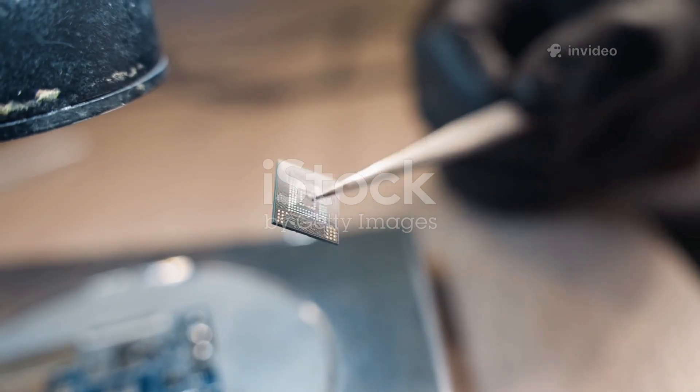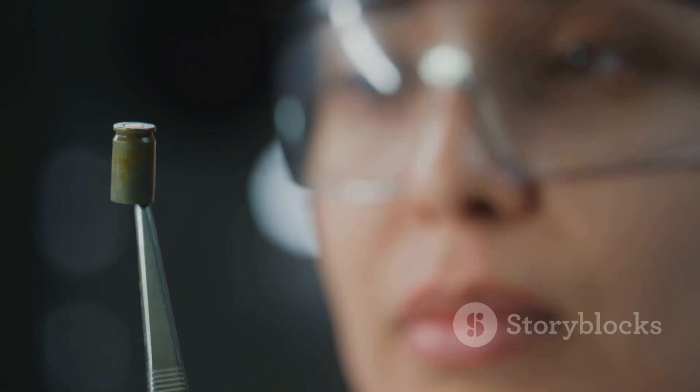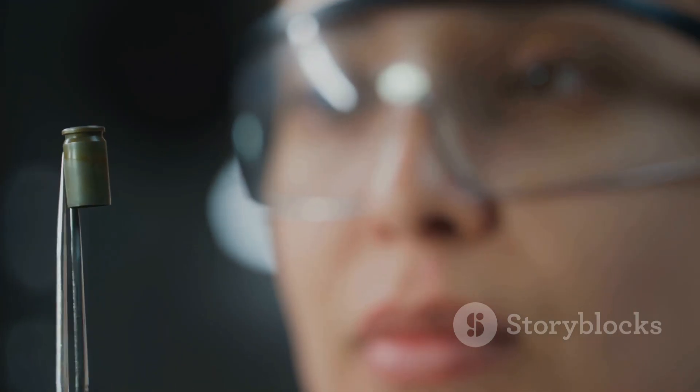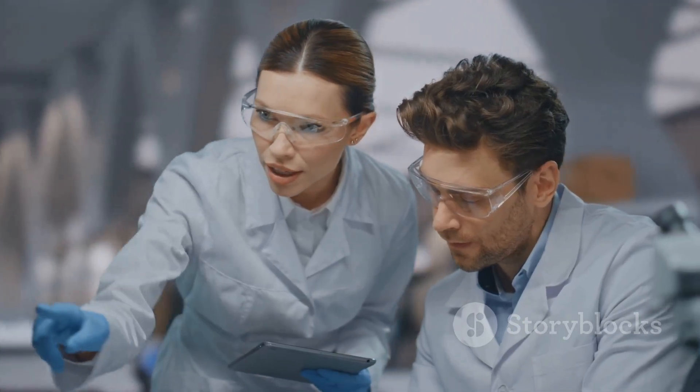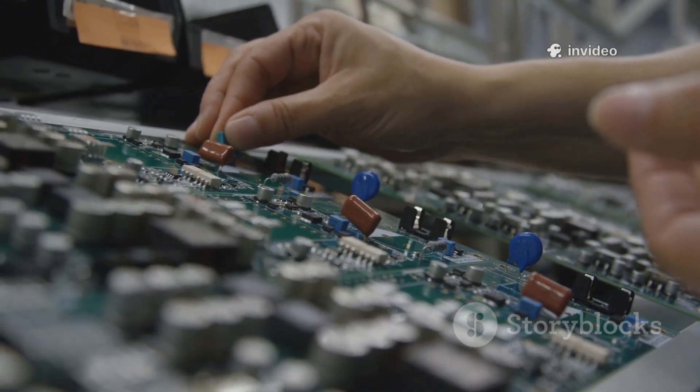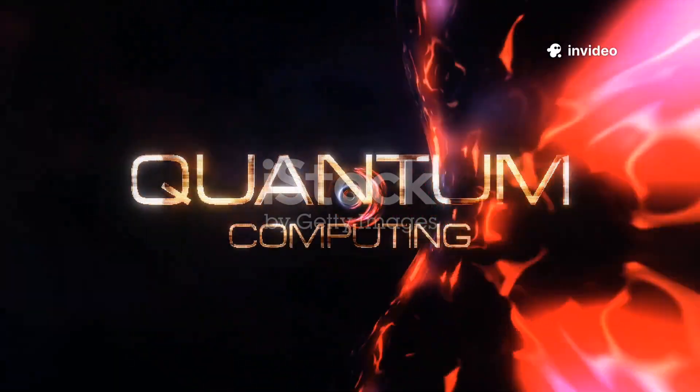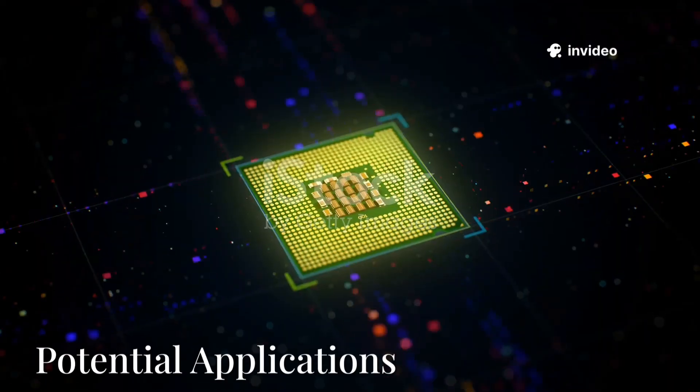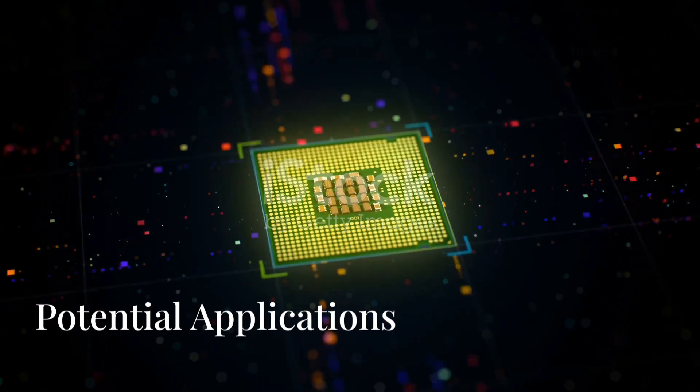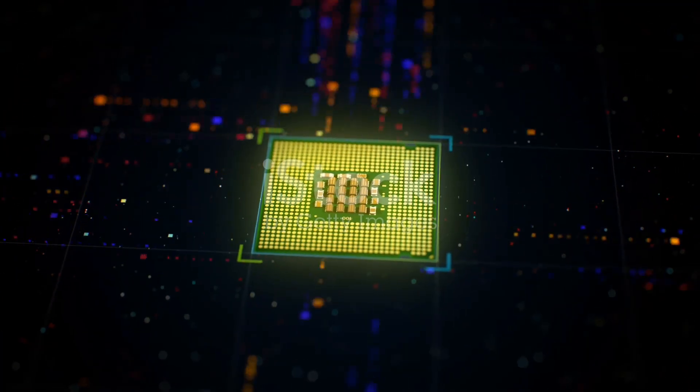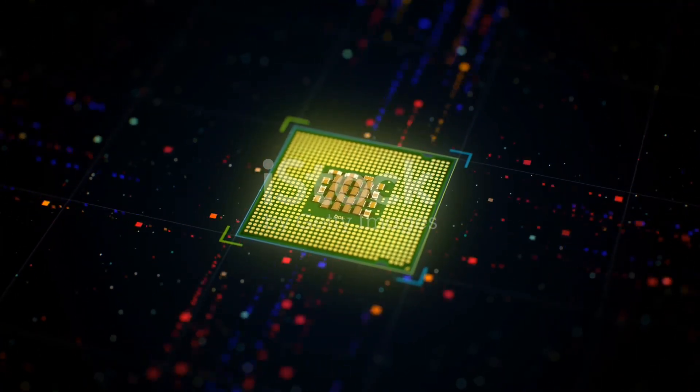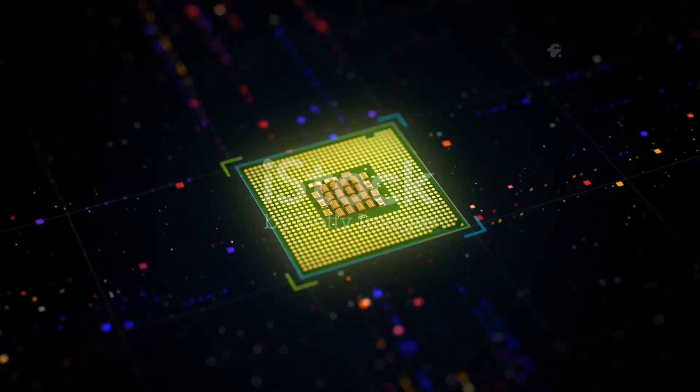While silicon controls electrons only by charge, bismuth allows control of spin as well. This really changes the game. Now, instead of just turning a current on and off, we're talking about quantum processing at chip scale. It's the kind of feature that can give birth to new types of transistors, memories, and even qubits.